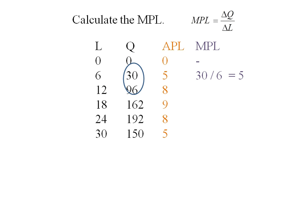Moving on. 96 minus 30 will be the numerator. 12 minus 6 will be the denominator, or 66 divided by 6, giving us a marginal product of labor of 11.